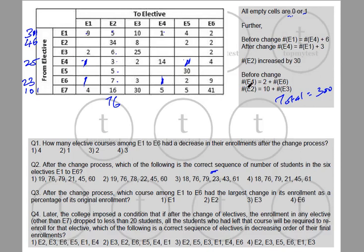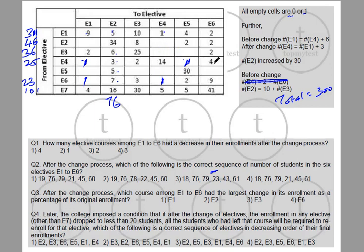Before the change, e2 was 10 more than e3, so e3 before = 36. Checking the e3 row: the known values sum to 33, then 33 + 2 = 35. So we need one more — it must come from one of the two blank cells, which can each be 0 or 1. We can't determine which one holds the 1 yet.